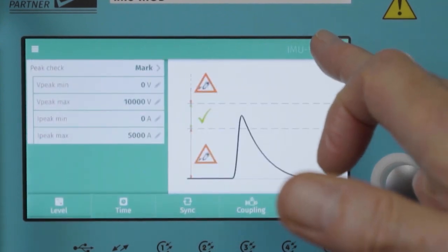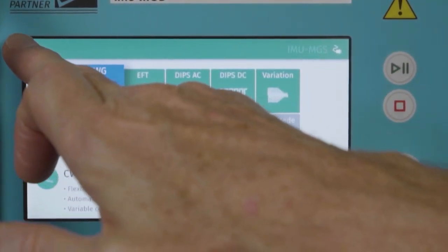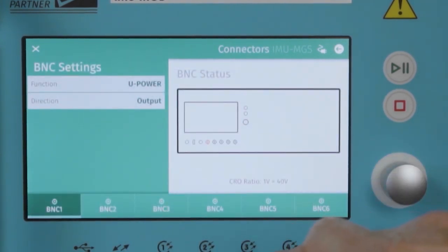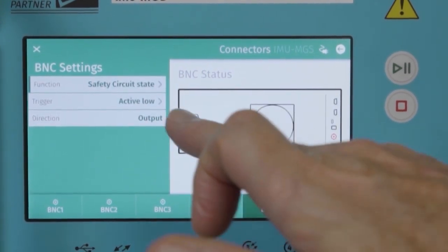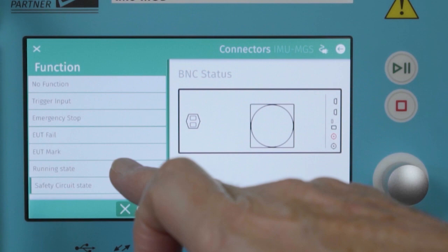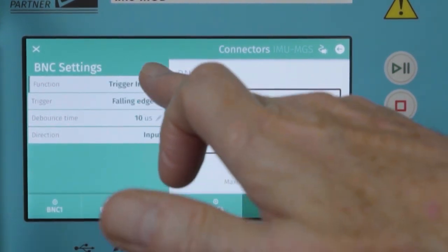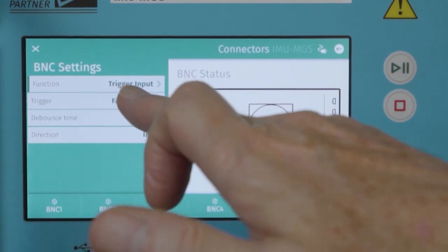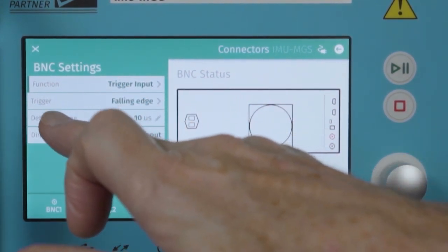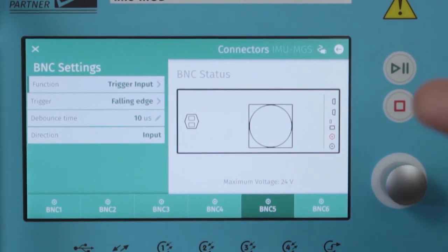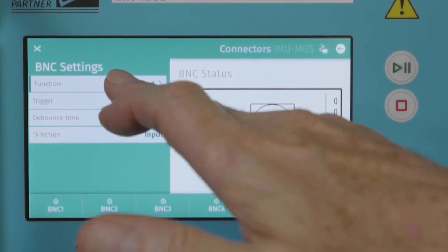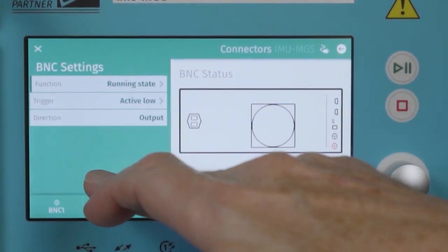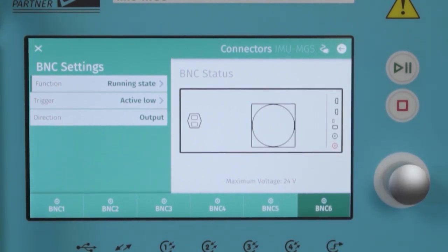We have programmable BNC connectors on the generator. Two at the front, two at the back. These can be programmed for either input or outputs. In this case, trigger input. We can select whether it's a falling or rising edge and a debounce time to prevent interference. BNC6 can be programmed as an output so that the function can be used to control the test process.